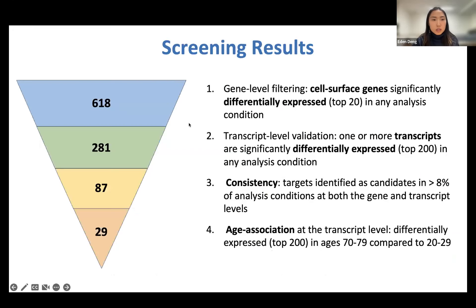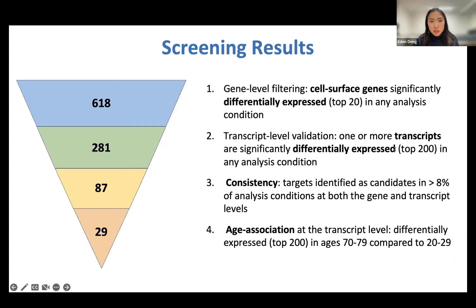Each senescent cell sample was analyzed for the top 20 targets, producing just over 600 membrane protein-coding genes highly expressed in at least one senescence analysis condition. We then filtered this list by checking for agreement at the transcript level — gene targets were kept if one of their transcripts was among the top 200 transcript targets in any analysis condition. This also allowed us to identify any splice variants or isoforms that might be specific senescence markers. We then filtered further for targets that were consistent across multiple conditions, removing any proteins that weren't common across different RS samples and normal tissue backgrounds.